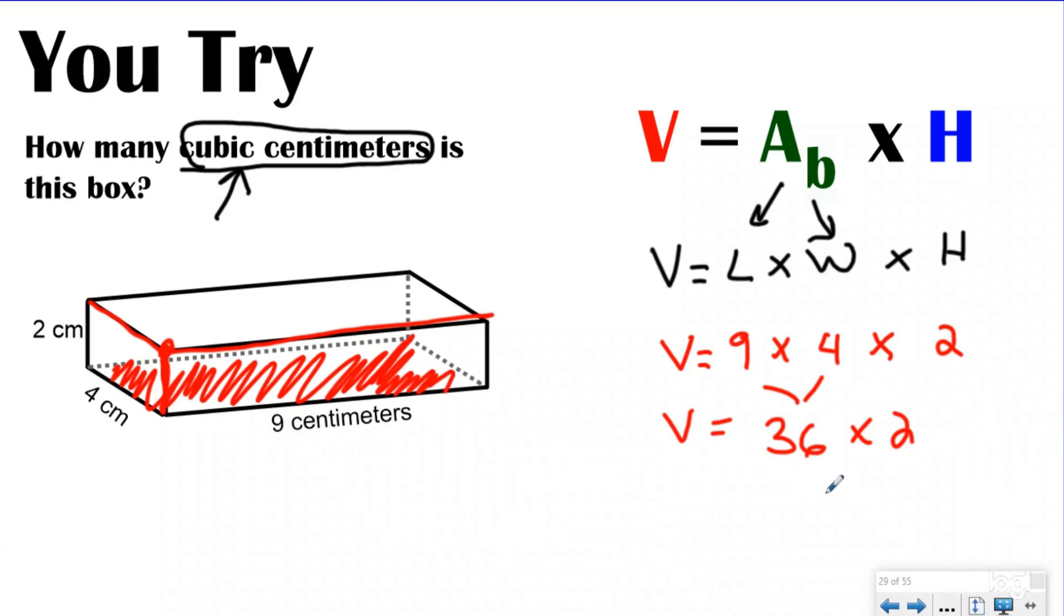I now know the area of my base was 36 square centimeters. And I have two layers of 36. So when I multiply that, I'm going to get 72 cubic centimeters. And I'm going to use the abbreviation for centimeters. I'm run out of room. So our volume for this,